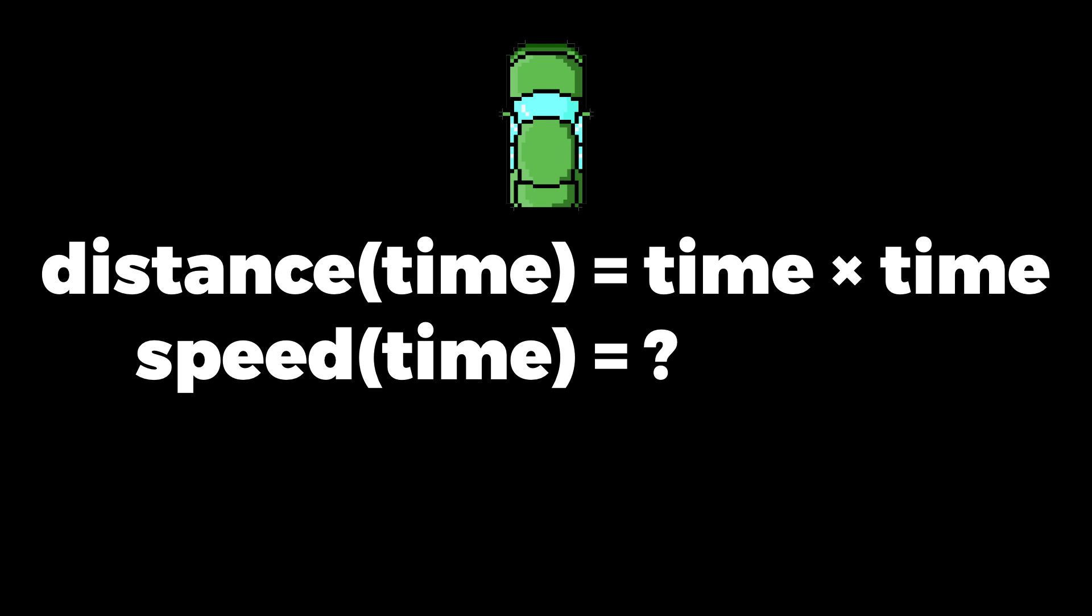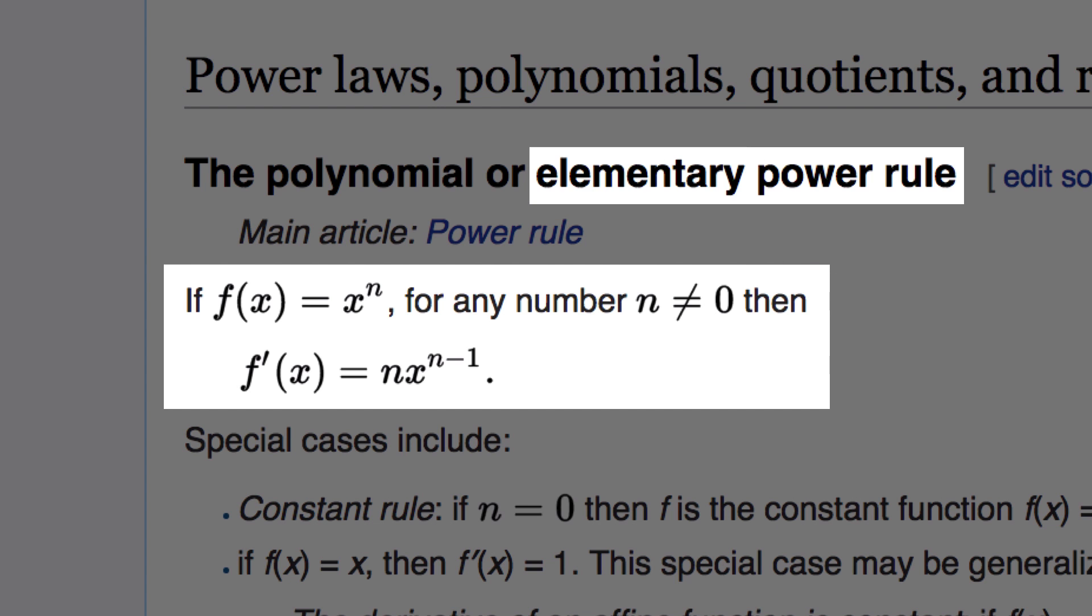To do symbolic differentiation, we represent the expression as a data structure inside the computer, as a tree of symbols, and get the computer to manipulate that structure according to all those differentiation rules and the rules of basic algebra. Firstly, we teach the computer that time multiplied by time can be written as time to the power of 2, or time squared. And then one of the differentiation rules, the elementary power rule, says something to the power of n differentiates to n multiplied by that something to the power of n minus 1.